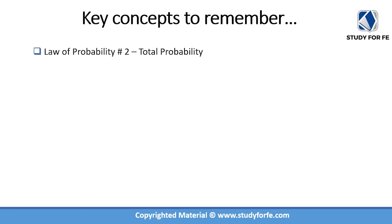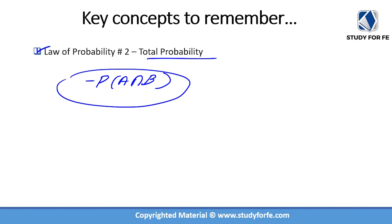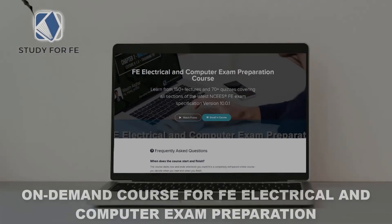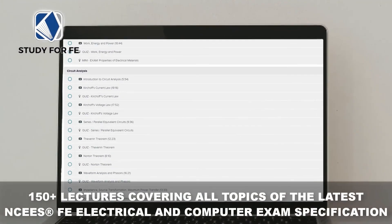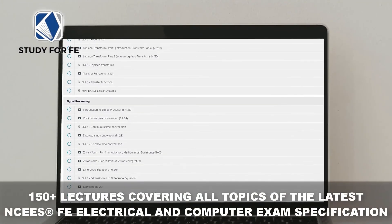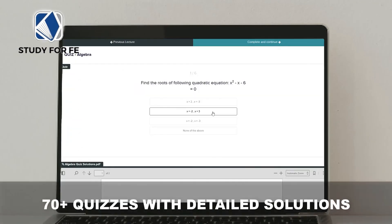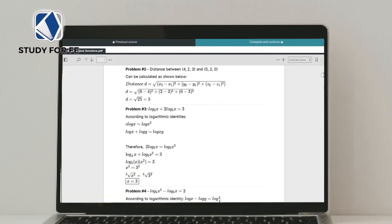In this lecture we learned about law of probability number two, also known as the total probability law or the inclusion-exclusion principle. Many students get confused about the intersection term in the equation, which is why we reviewed it through examples and Venn diagrams. The full course contains over 150 lectures covering all topics in the latest NCEES electrical and computer exam specification, with quizzes, mini exams, and a full-length computer-simulated practice exam.